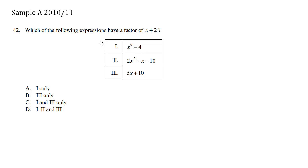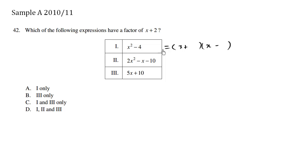Which of the following expressions have a factor of x plus 2? Let's take a look at these one at a time. For the first one, we have difference of squares. This equals x plus or minus the square root of 4, which is 2. So we see that choice number 1 has the factor x plus 2.